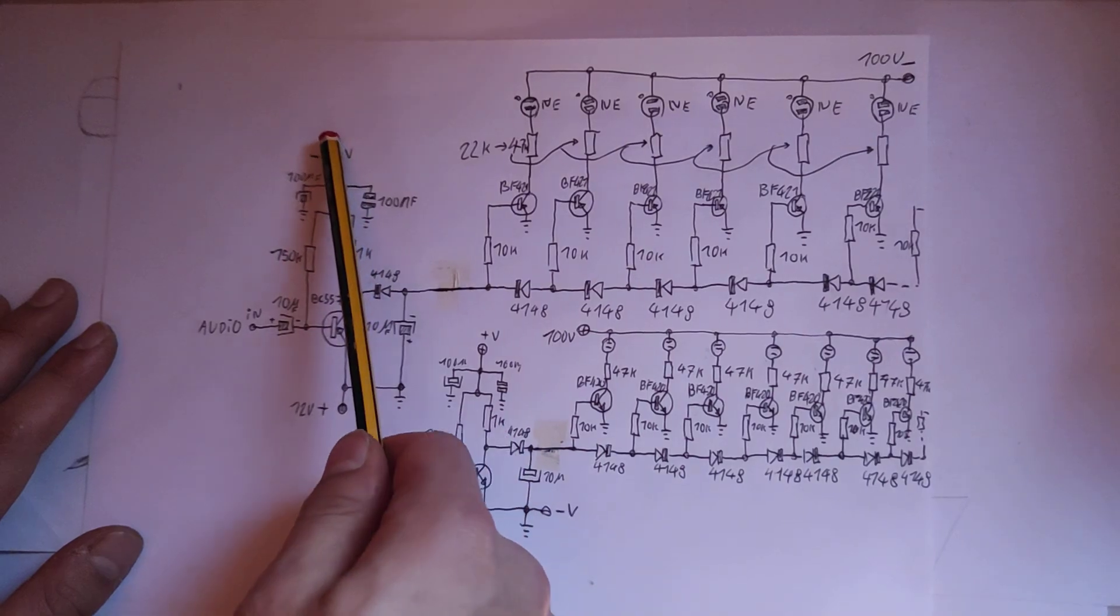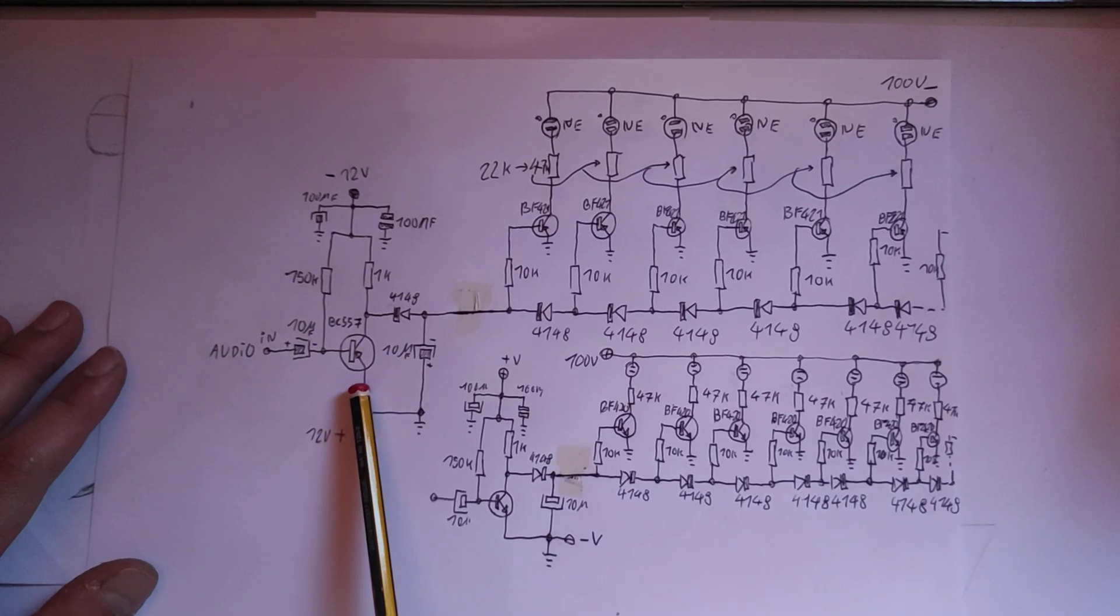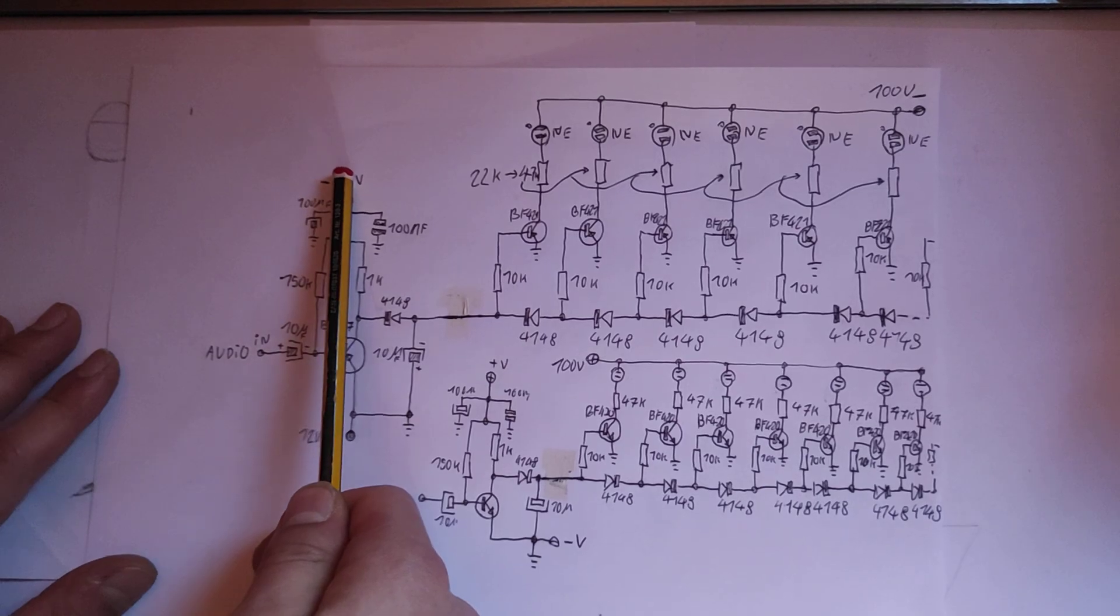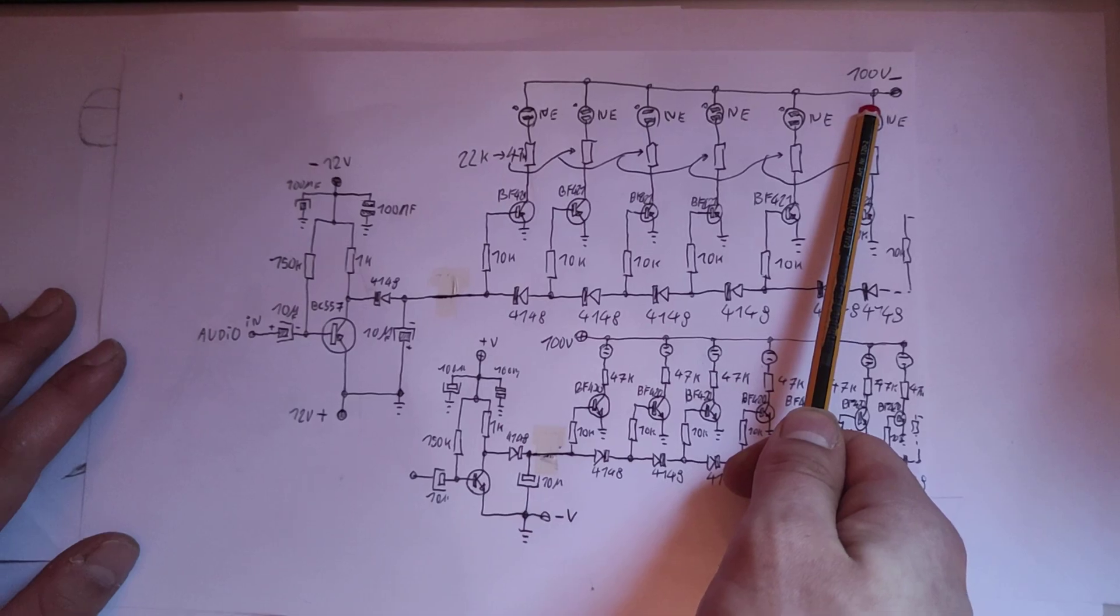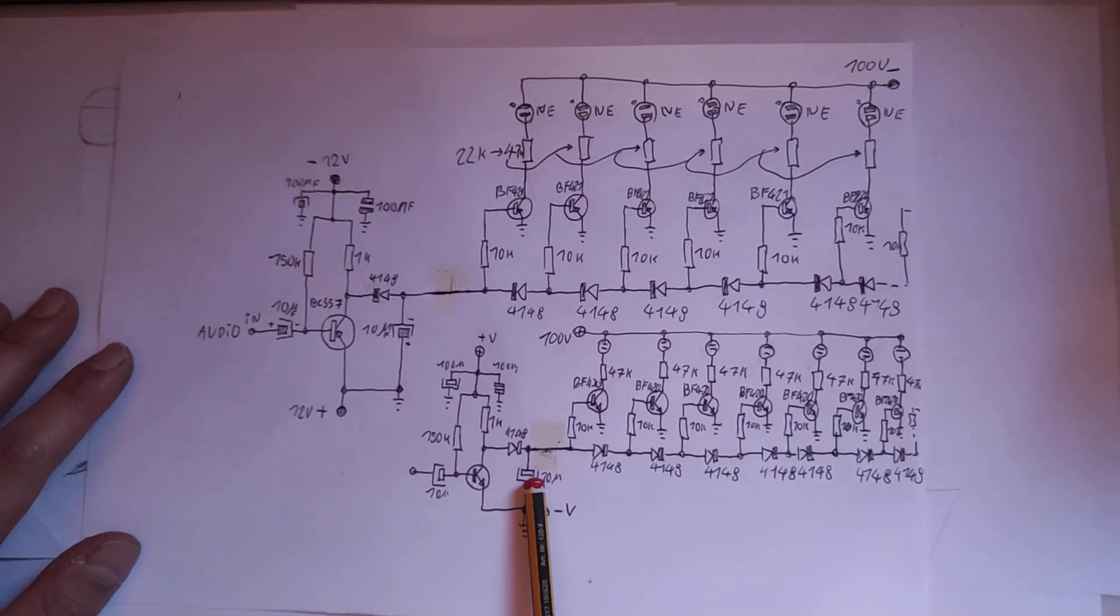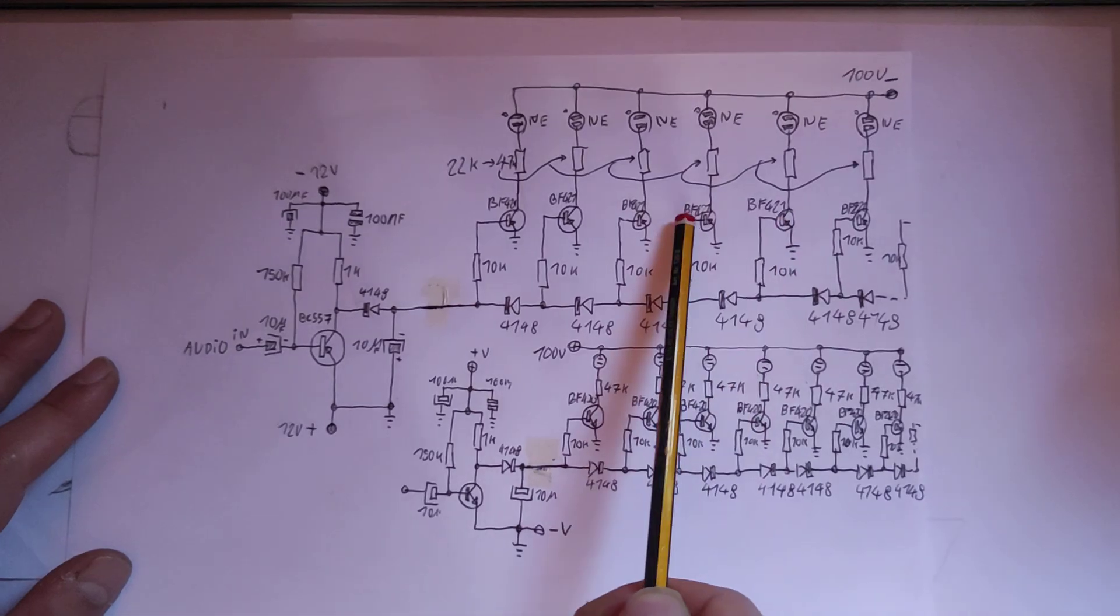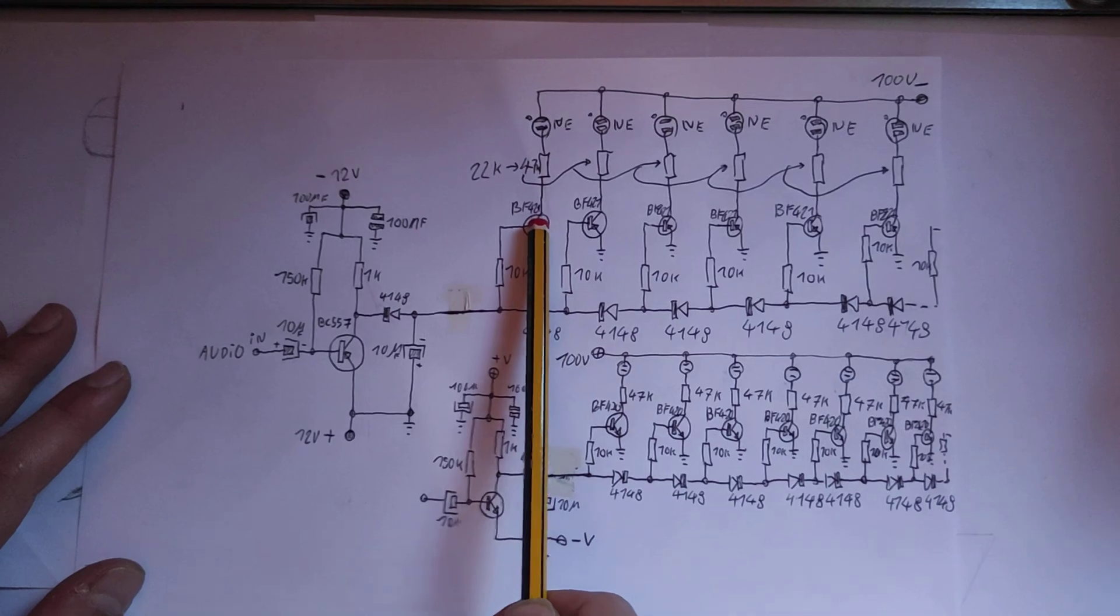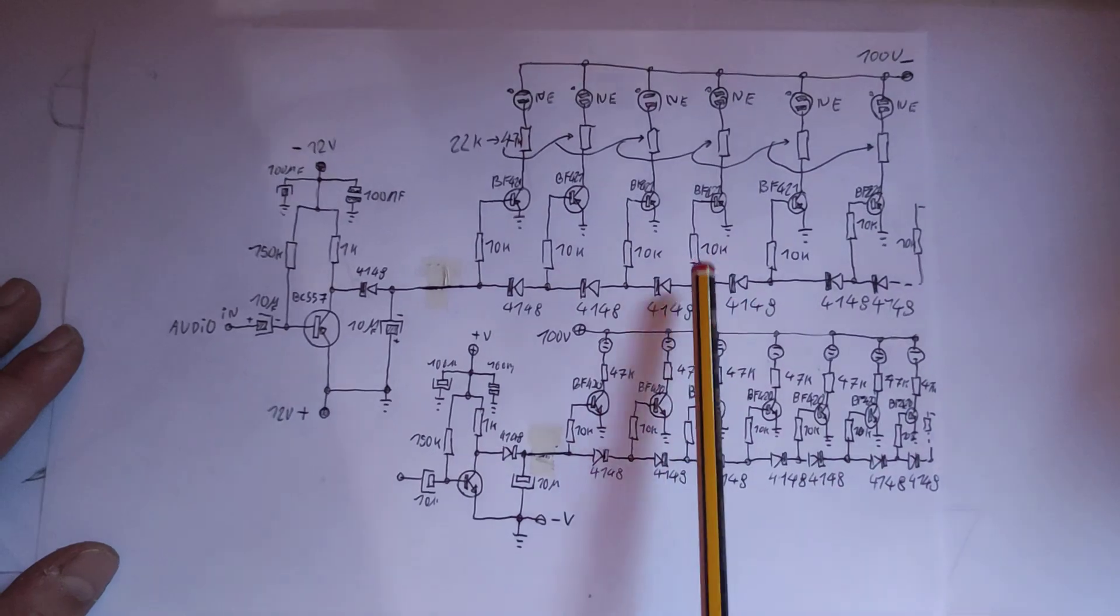And you obviously reverse the polarity because the emitter, in this case, from the PNP transistor is positive. The collector goes to negative. Same here. Collector, negative 100 volts. Here it's reversed, positive 100 volts. And we have to keep into account these transistors have to be of a type that can handle a bit of a higher voltage. In this case, these BF421 transistors can handle up to 300 volts.